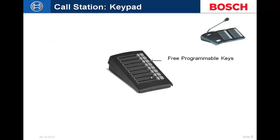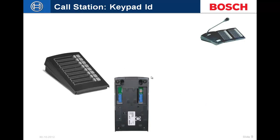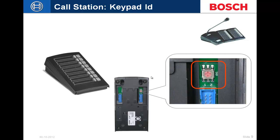Up to 16 keypads can be connected to the system. The keypads have removable key label covers — you can fill out an Excel spreadsheet with the keypad blanks, print and cut it out, and slip it under the label covers. Each button has a status LED. Key covers are available as replacement light pipes — remove the existing light pipe and press the new one into place. The keypads are addressable units with a hex dial on the rear, addressable from 0 through 15, and connected to the call station via ribbon cable.